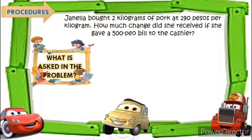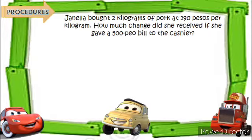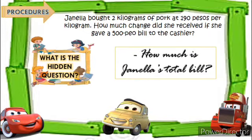Number 2: what is asked in the problem? How much is Janela's change? Number 3: what is the hidden question? This problem needs two operations in order to get the exact solution. Therefore, we need to find the hidden question — and the hidden question is: how much is Janela's total bill? We need to find the total bill for Janela's pork first, in order to know how much change she receives when she gives a 500-peso bill.